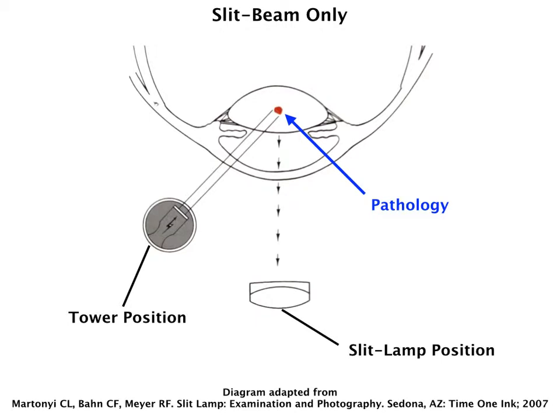Throughout this talk, I'm going to be using diagrams that I adapted from a book called Slit Lamp Examination and Photography. I think it really is the best I've seen that shows how we're able to get these photographs — where the tower position is and where the slit lamp position is in relation to the pathology.